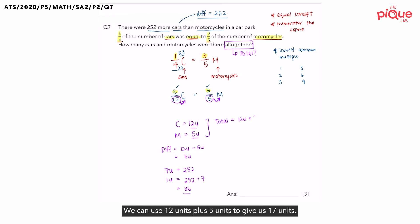We can use 12 units plus 5 units to give us 17 units. And since we have already found what is 1 unit, 1 unit, as we have found, is 36. So, 17 units would be 17 times 36 to give us a total of 612. So, have we found our answer? Yes, we did.